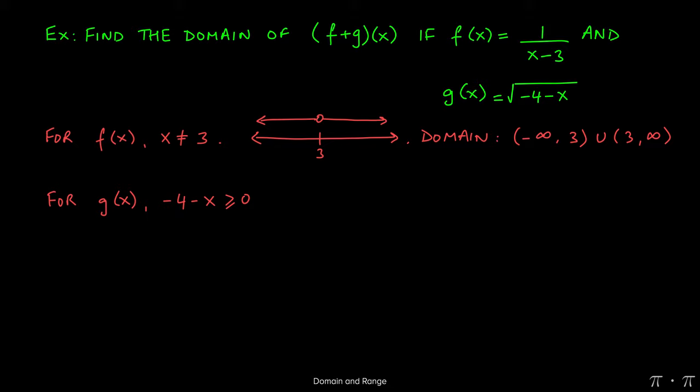So to find out which values of x make that true, we set our radicand negative 4 minus x to be greater than or equal to 0. We can solve this very quickly by moving the x to the other side. If we add it over, 0 plus x will just give us x, and this will yield negative 4 is greater than or equal to x.